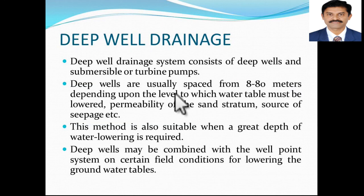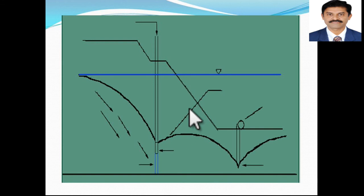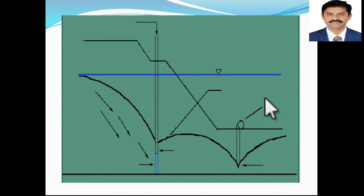Deep well drainage consists of deep wells and submersible or turbine pumps. This is heavy machinery, heavier than what is used for shallow wells. Deep wells may be combined with well point systems under certain field conditions for lowering ground water tables, and this method is also suitable when a great depth of water lowering is required. In the schematic, the water table was at a high level and is then pumped out and lowered again using another set of pumps and wells.